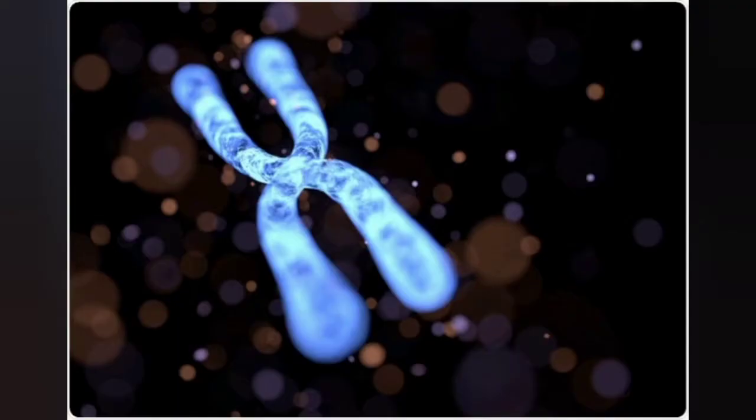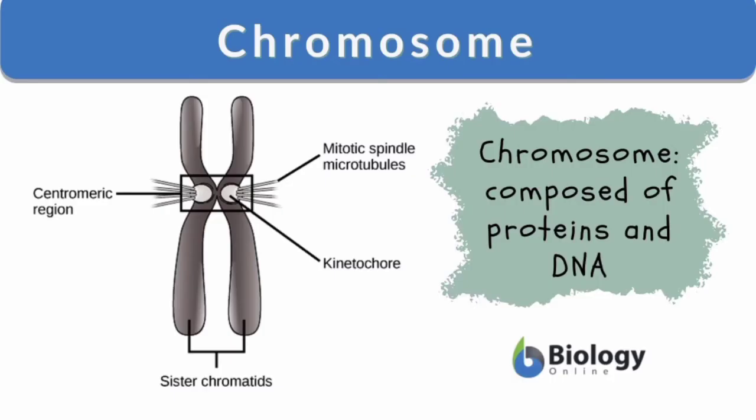Chromosomes are located in the nucleus. Most of the chromosomes in a cell are what we call autosomes. In addition to that, one or two sex chromosomes, also called heterosomes, are present, which carry the genes for the determination of sex.